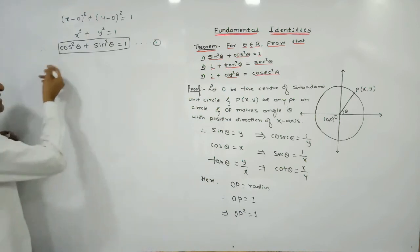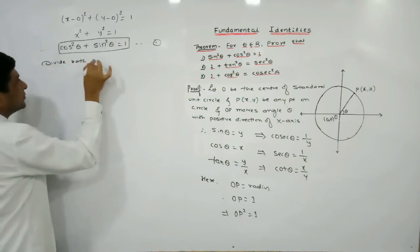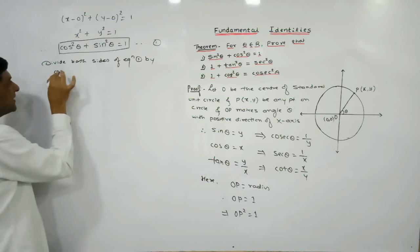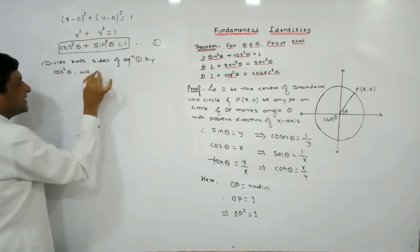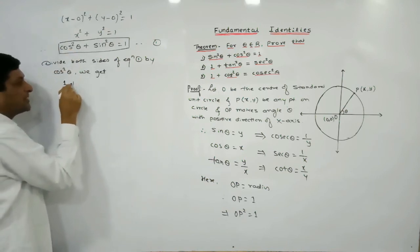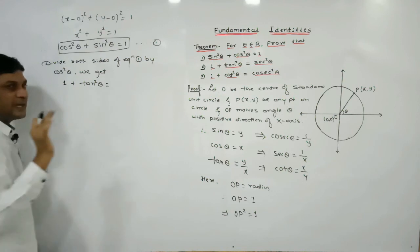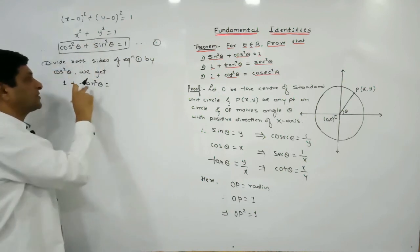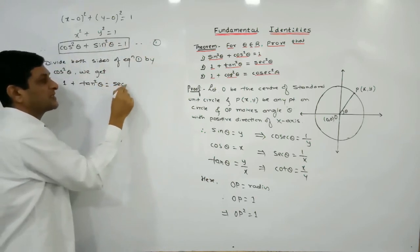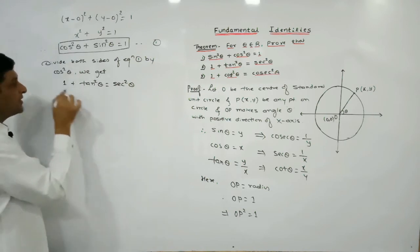To prove the second identity, divide both sides of equation 1 by cos squared theta. So cos squared theta upon cos squared theta gives 1, plus sin squared theta upon cos squared theta equals tan squared theta — because sin theta upon cos theta means tan, so sin squared upon cos squared equals tan squared. And 1 upon cos squared equals sec squared theta. Thus we have proved: 1 + tan²θ = sec²θ.